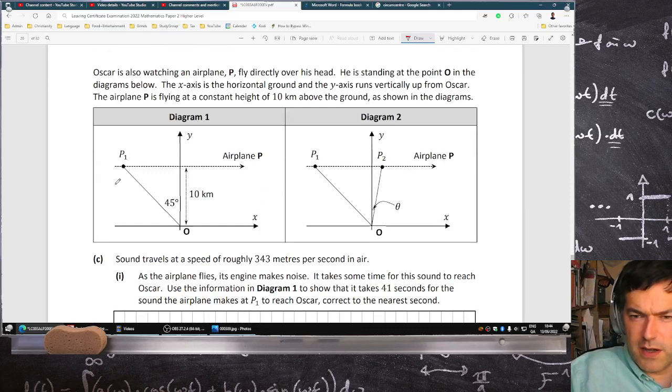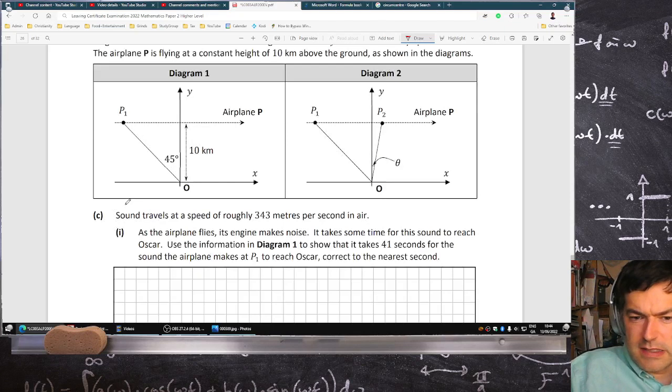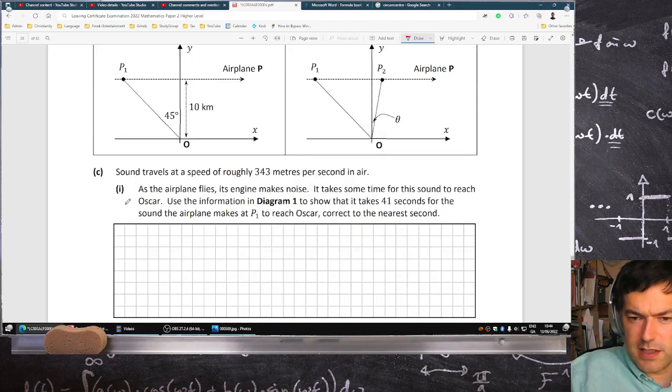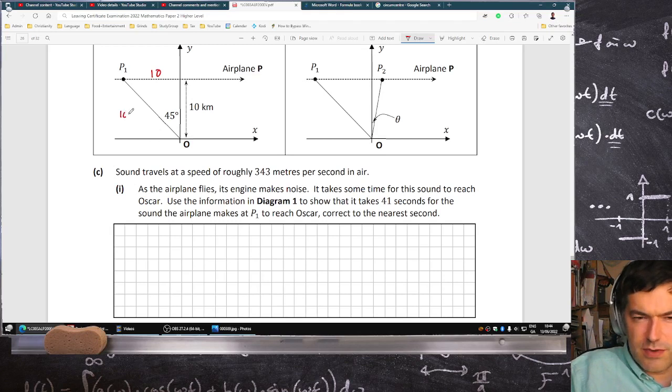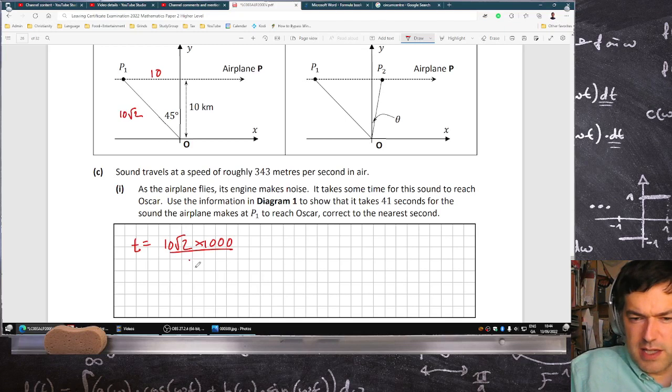Right, Oscar is watching an airplane P fly overhead. He's standing at point O in the diagram below, 10 kilometers from the plane. Sound travels at a speed of roughly 343 meters per second. Well, if that's 10, that's 10, and that's 10 root 2 kilometers, so the time is the distance 10 root 2 kilometers over our speed: 41 seconds to the nearest second.